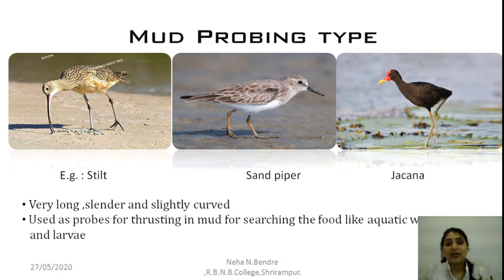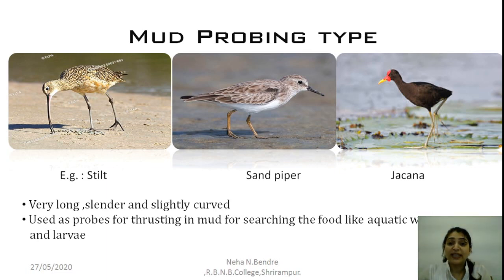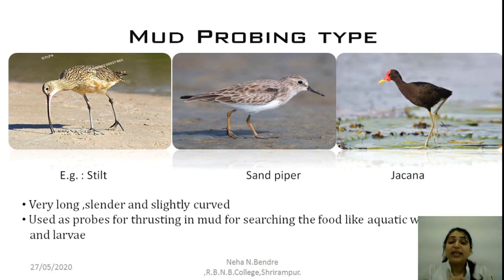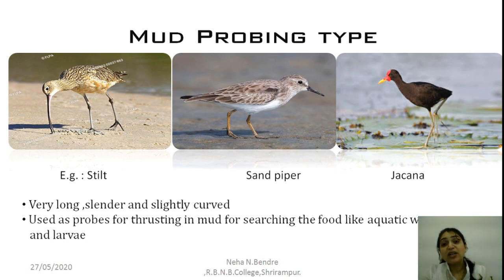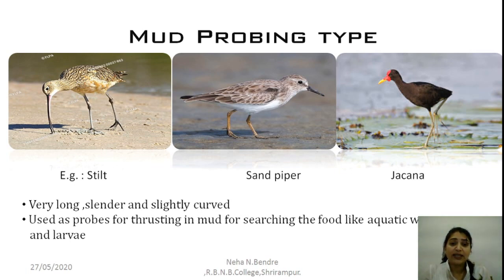There is often confusion between the mud straining type and the mud probing type of beak, so don't be confused. The difference is that mud straining beaks have strainers and are flat and broad, while mud probing beaks are long, slender, and slightly curved without strainers. These mud probing birds also dwell around water bodies and feed on aquatic worms and larvae, probing the mud with their long, pointed beak. This type is found in stilts, sandpipers, and jacanas.